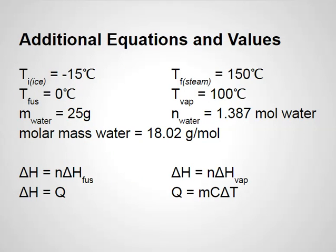Here are the equations and values we'll need. The starting temperature for the ice is minus 15 degrees Celsius; the final temperature for the steam is 150 degrees Celsius; the melting point is zero degrees Celsius; the boiling point is 100 degrees Celsius. The mass is 25 grams, and the molar mass of water is 18.02 grams per mole, giving us 1.387 moles of water. We'll use delta H of fusion equals moles times the delta H of fusion constant, delta H of vaporization equals moles times delta H of vaporization, and Q equals MC delta T for heating steps.